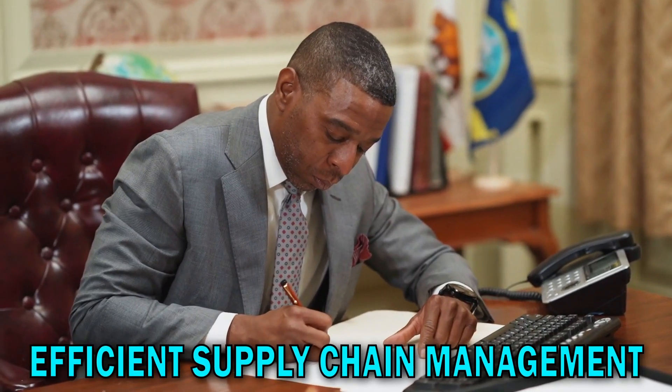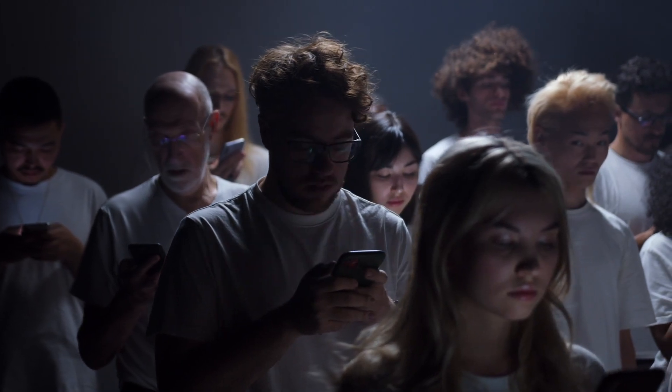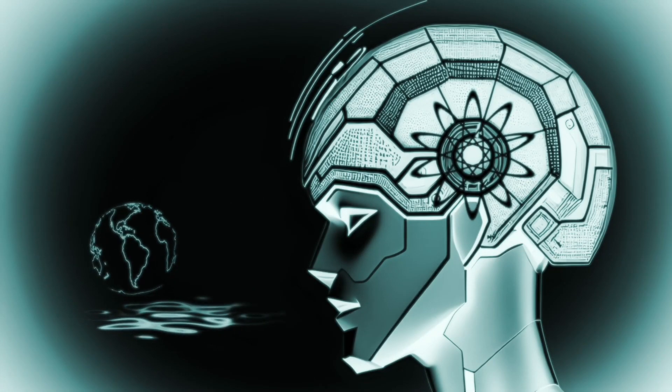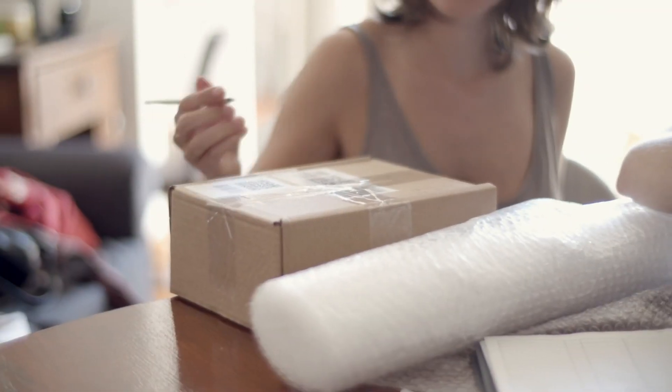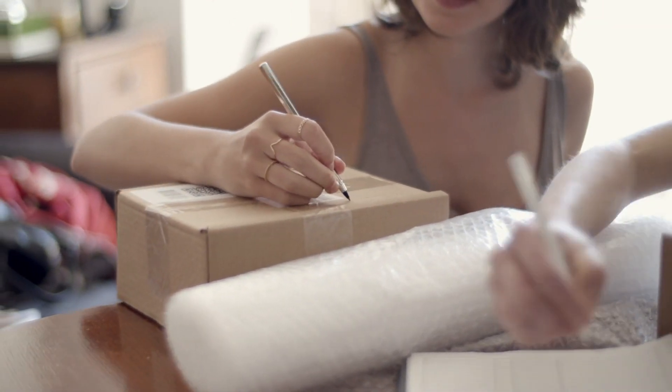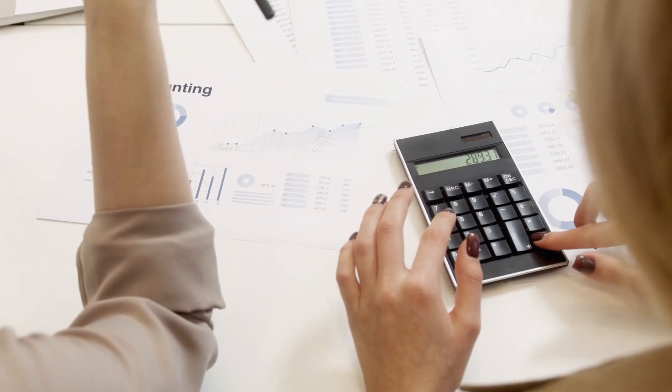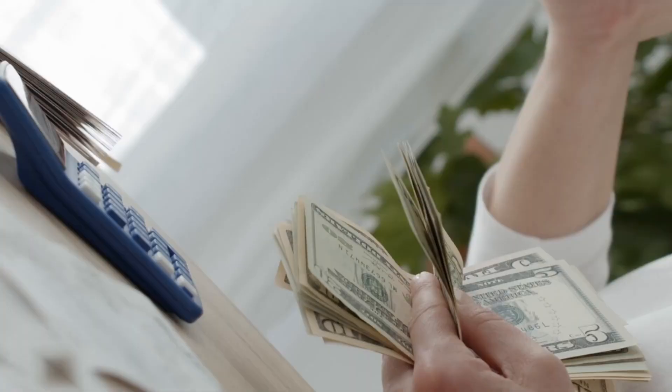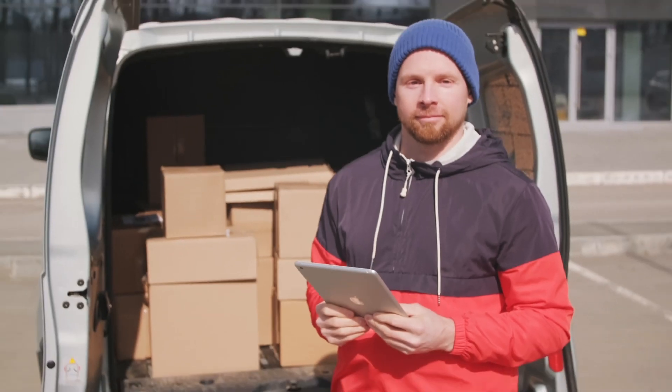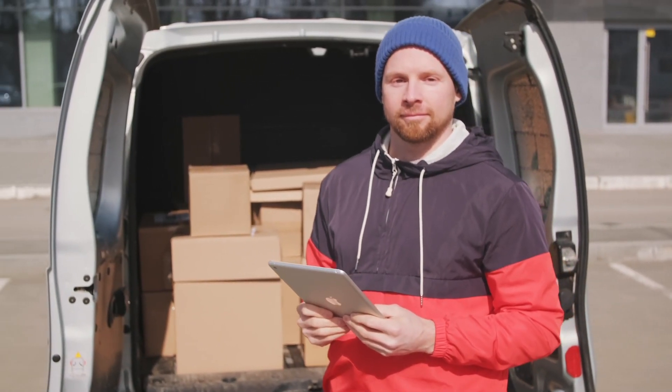Efficient supply chain management. In our interconnected world, making sure things move smoothly is really important. AI technology can help make supply chains work better by managing things like how much stuff to keep in stock, the best routes for deliveries, and guessing how much people will want to buy. This saves money and makes sure things get where they need to go faster.